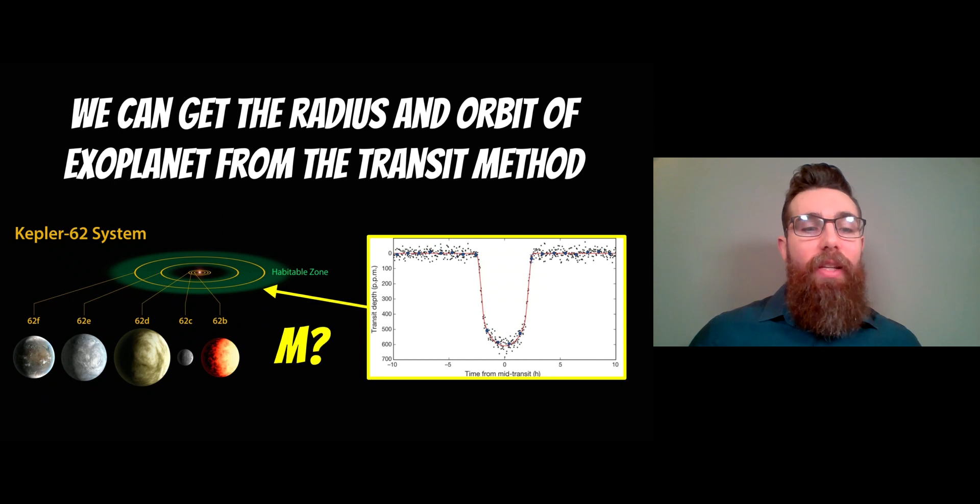With the transit method, where a planet passes in front of the star and blocks out some of the light, we can get the radius and orbit of the exoplanet. What we can't do is get the mass. So we need a different method to get the full information of that particular system, and that is the radial velocity method.